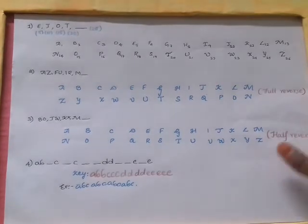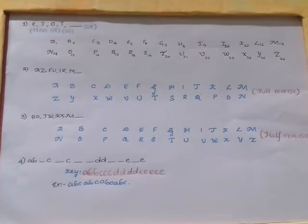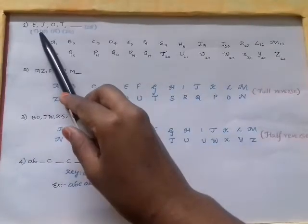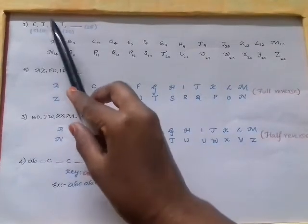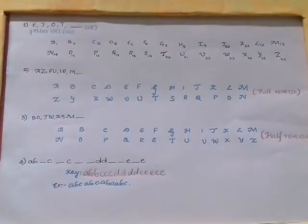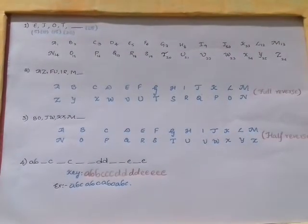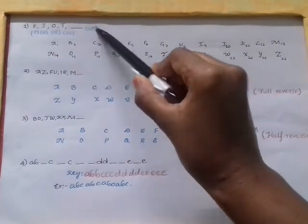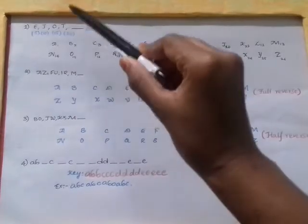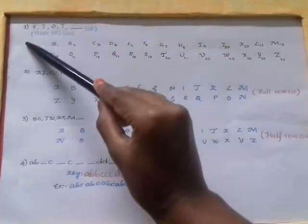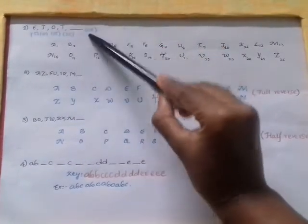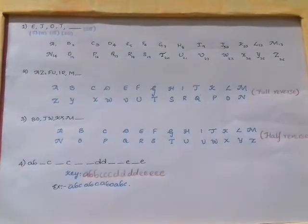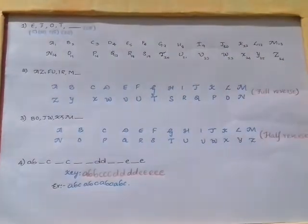The first question was E, J, O, T and so on. E is the first letter of the series, J is the 10th letter, O is the 15th letter, T is the 20th letter. The number series is drawn down here: 5, 10, 15, 20. The next number would be 25 and the 25th letter is Y. So the answer is Y.